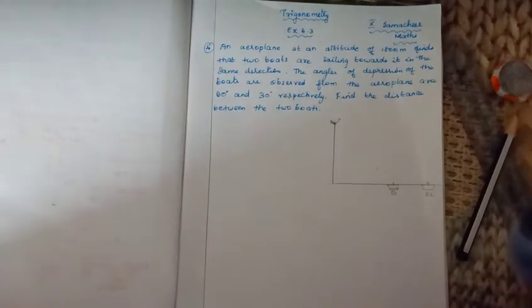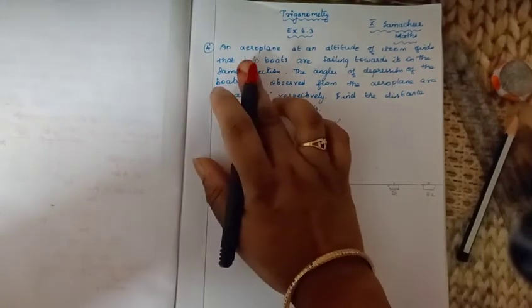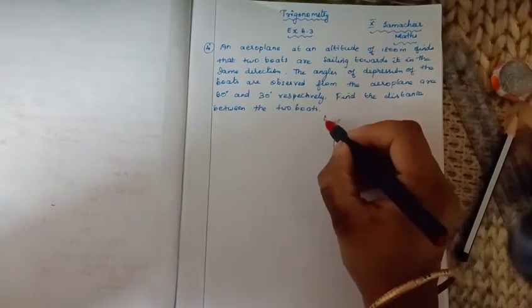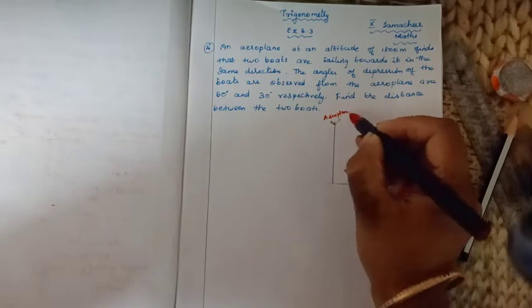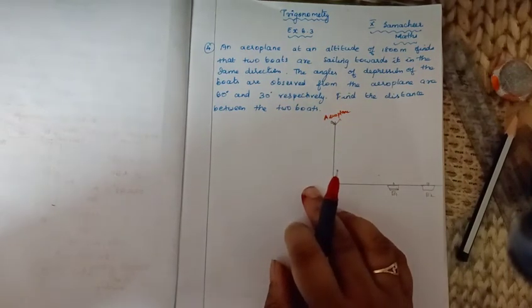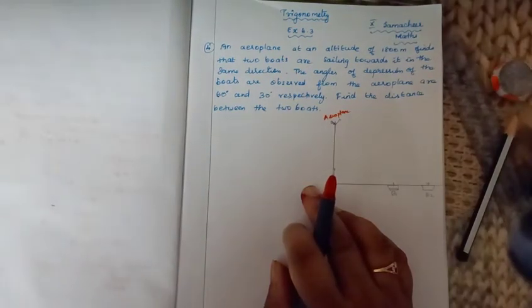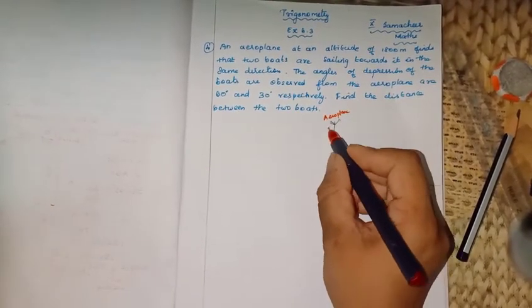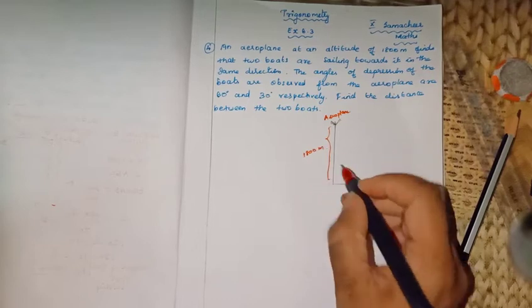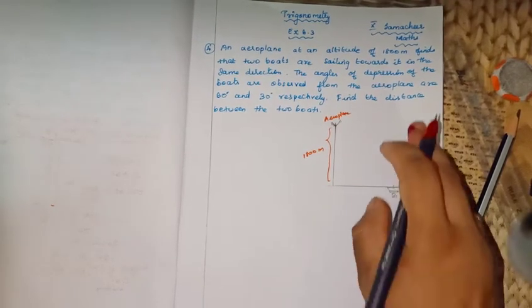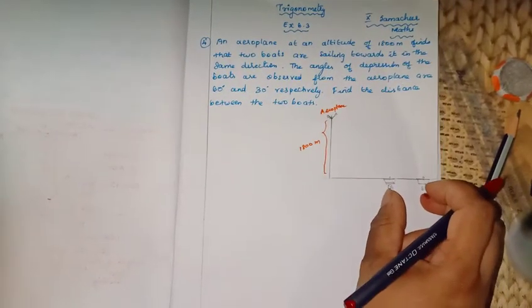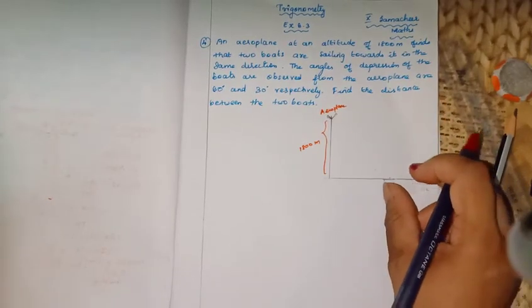Welcome students to my channel. This is trigonometry exercise 6.3. The problem: an aeroplane is at an altitude of 1800 meters. The altitude is the height above ground level — 1800 meters. Now, two boats are sailing towards it in the same direction.